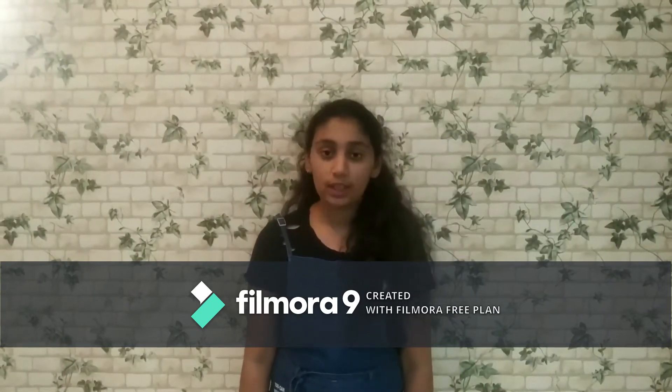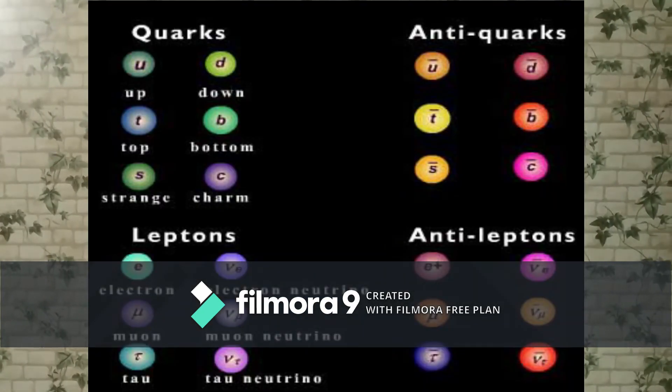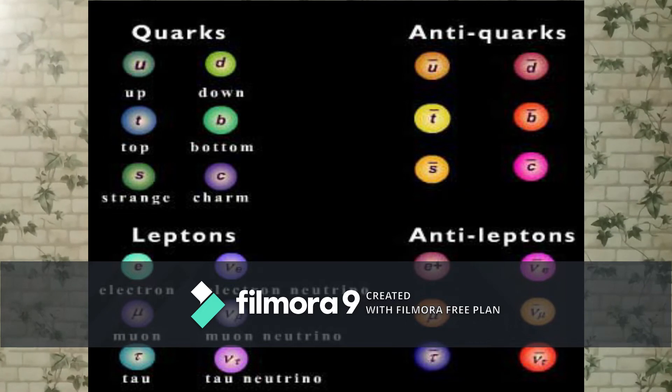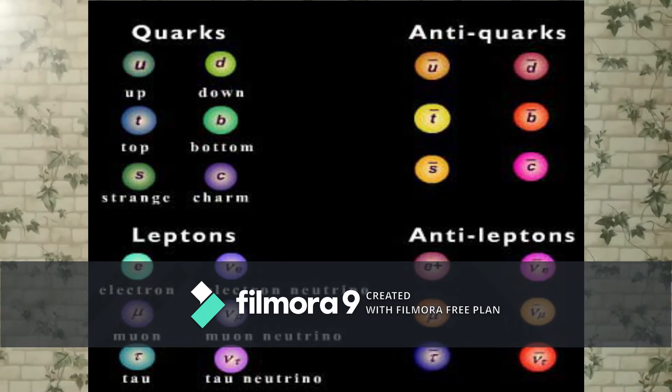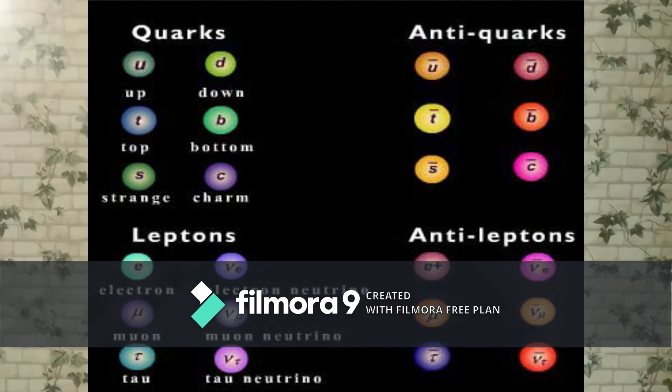Baryons have three quarks each, and mesons have one quark and one antiquark. Wondering what is an antiquark? Every particle has an antiparticle. Like you can see here: electron has an antiparticle, positron; neutron has antineutron; proton has antiproton.